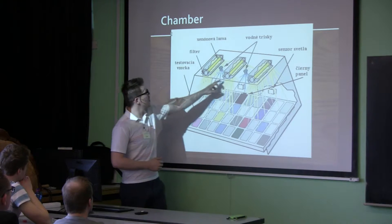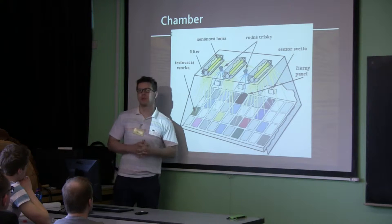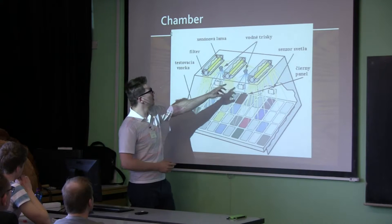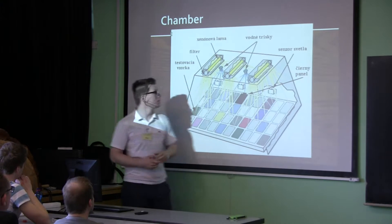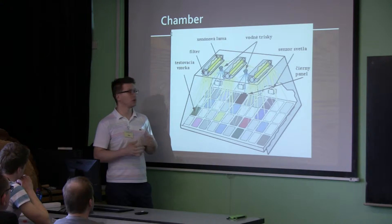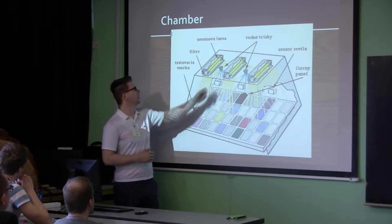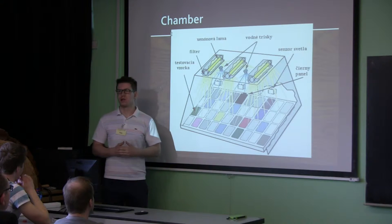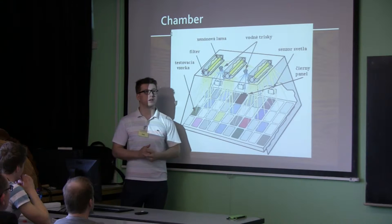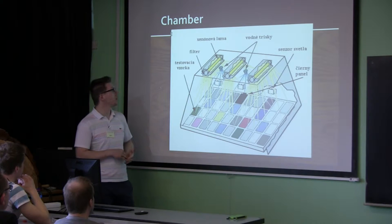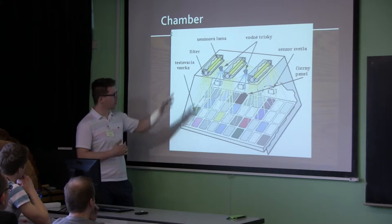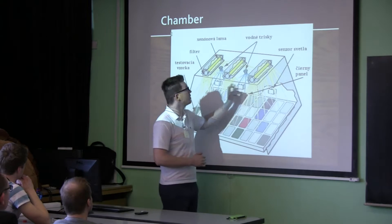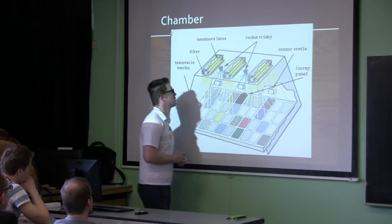This is the place where the filters are. When we change the program, we can choose the program for interior or exterior. This is the place where we put the glasses — we can put interior glass, which reproduces the sunlight as it comes through a window, or exterior glass. The difference is that interior glass, like window glass, does not allow as many UV waves to reach the surface of the wood.